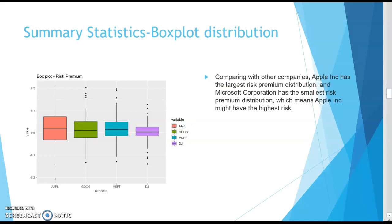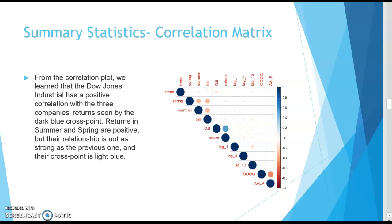We then perform some general summary statistics. We use a box plot distribution to find which stock is riskier. Comparing the three stocks for which we found the market risk premium, we can clearly see that the risk premium for Apple is the highest, so it is said to have a higher risk than the other stocks. Microsoft Corporation has the smallest risk premium distribution, so it is said to have the lowest risk. We also use a correlation matrix plotted using a correlation plot. The Dow Jones Industrial has a positive correlation with the three companies' returns, seen by the dark blue cross points. Returns in summer and spring are positive, but their relationship is not as strong.